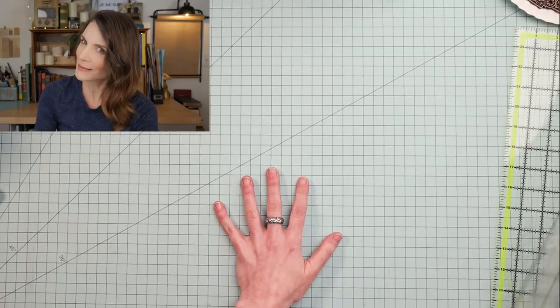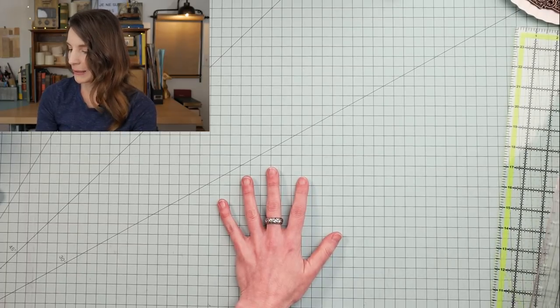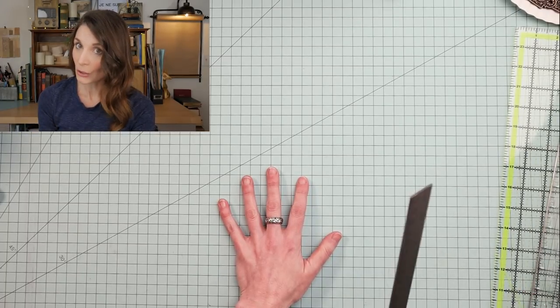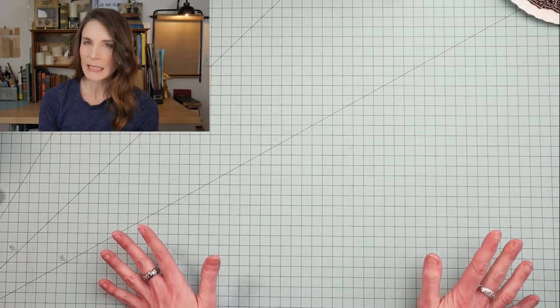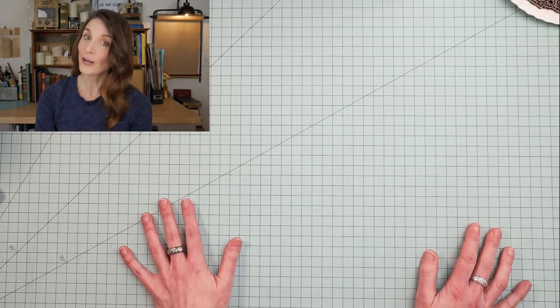Okay. So those are my essentials. The cutting mat. Some kind of a clear ruler with a grid on it. A steel ruler. So these are the essentials.